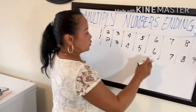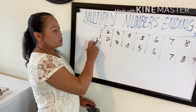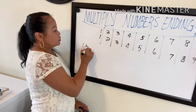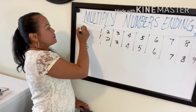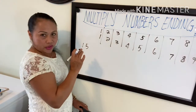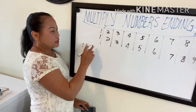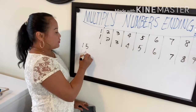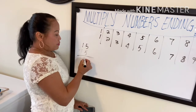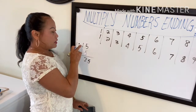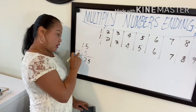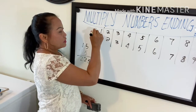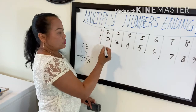The five at the end is always constant — it never changes. The only thing that changes is the first digits. So for 15 times 15: five times five, bring down 25, one plus one is two, two times one is two — the answer is 225.